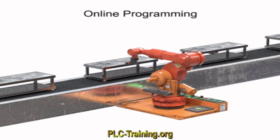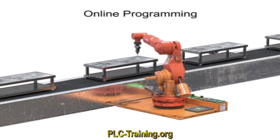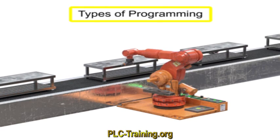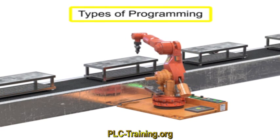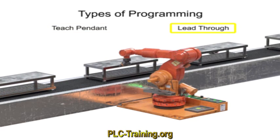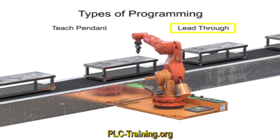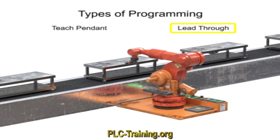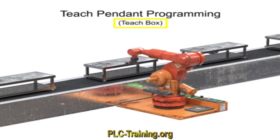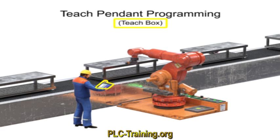Online programming occurs when the robot is online or in an operational mode. The two types of programming we will discuss here are teach pendant programming and lead-through programming. A teach pendant, also called a teach box, is a handheld control and programming unit connected to the robot via a cable.